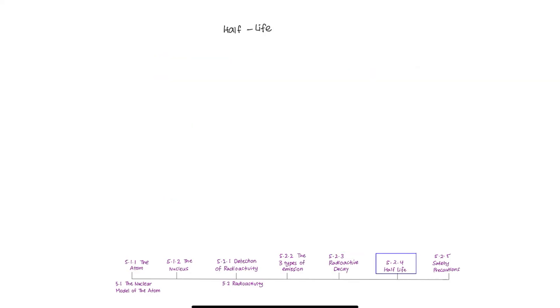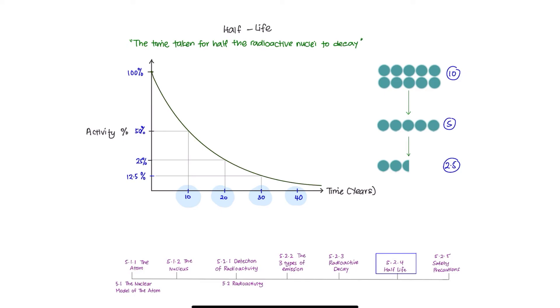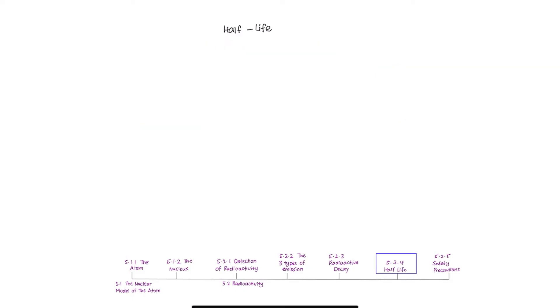Moving into half-life. Half-life can be defined as the time taken for half the radioactive nuclei to decay. Hereby, you have a graph showing the activity of a substance with a half-life of 10 years. After 10 years, half the original nuclei in the radioactive isotope have decayed. After 20 years, another half the remaining nuclei in the radioactive isotope have decayed to become half.